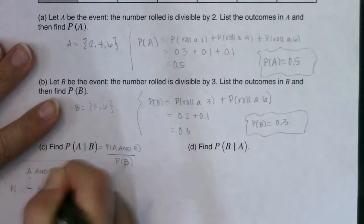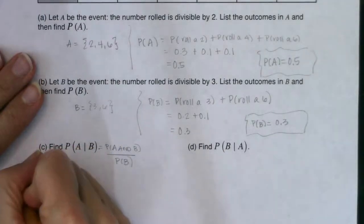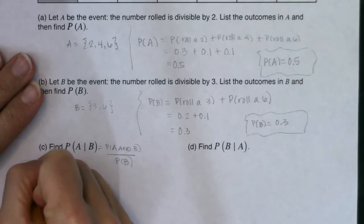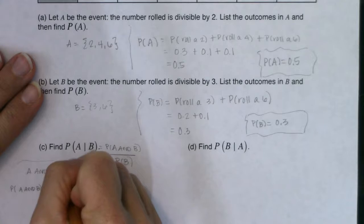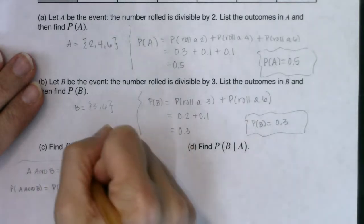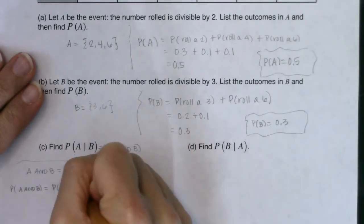I wrote this incorrectly. Okay, here we go. Probability of A and B equals the probability that I roll a 6. All right.